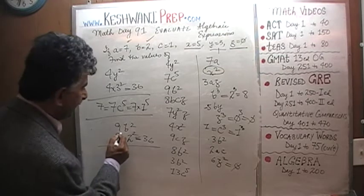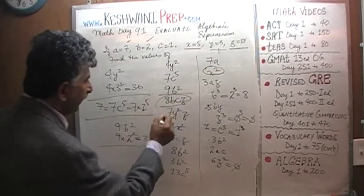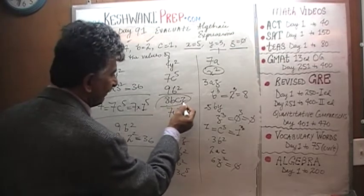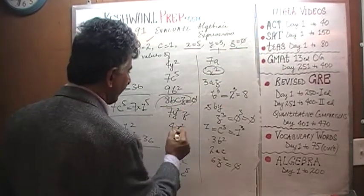Let's keep on going, we have 9B squared. Oh, 8BC times Z, Z is equal to 0, so this thing is going to be just big fat 0.